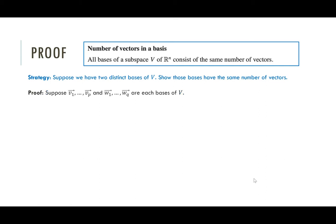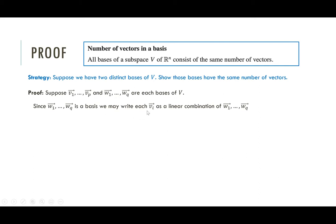Let's start by supposing we've got two bases: V1 to VP and W1 to WQ. Right now we're agnostic about whether P equals Q or not — these are each a basis of V. Our first step is to say that since W1 to WQ is a basis, any vector in V has to be a linear combination of the W vectors. Each VI is in the span of the Ws — that's what it means for the Ws to be a basis.